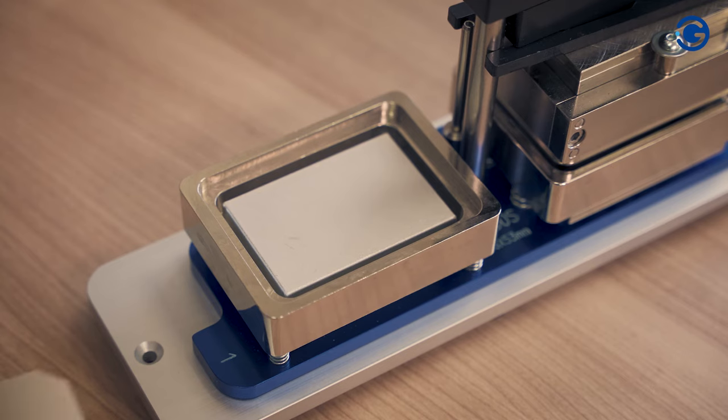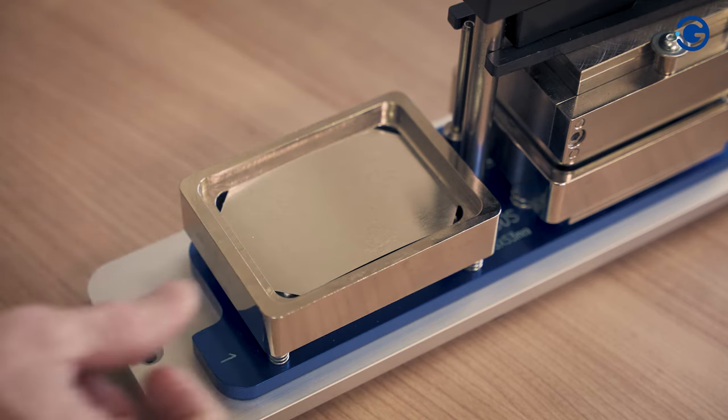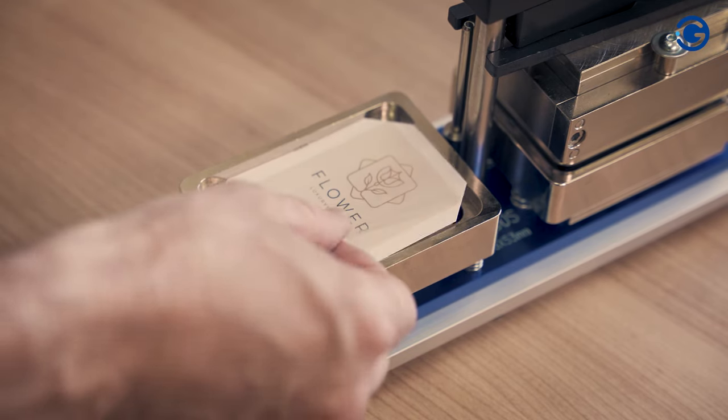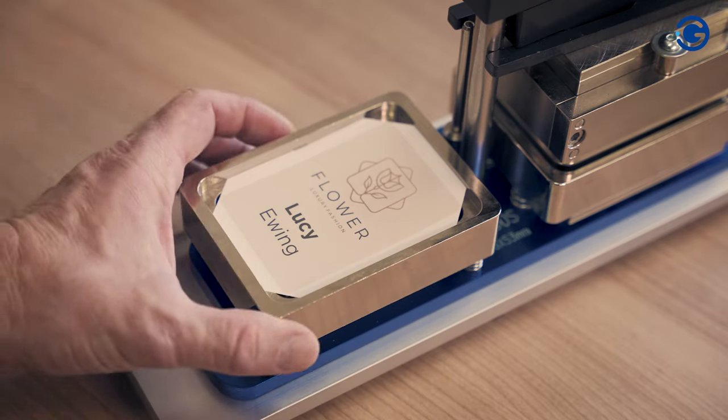To start the process, place the number one mould back on the front of the machine. Place the front mould in mould number one. Place the paper on top of the front. Take a piece of polyester from the pile, making sure there is only one, and place it on top of the paper.